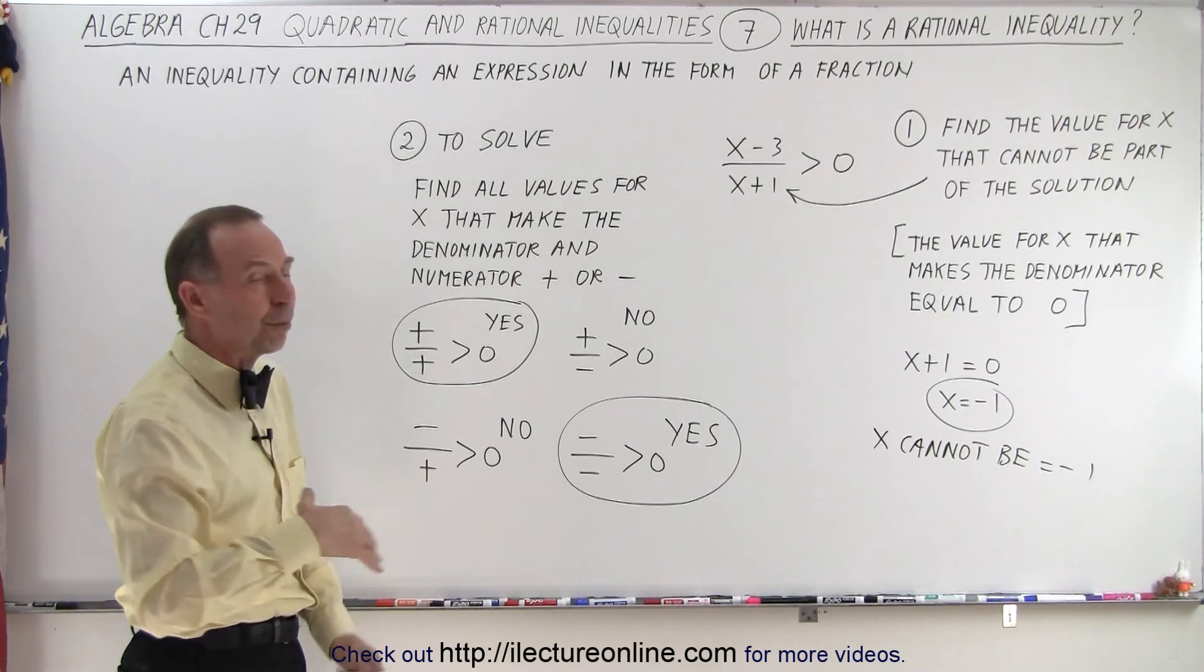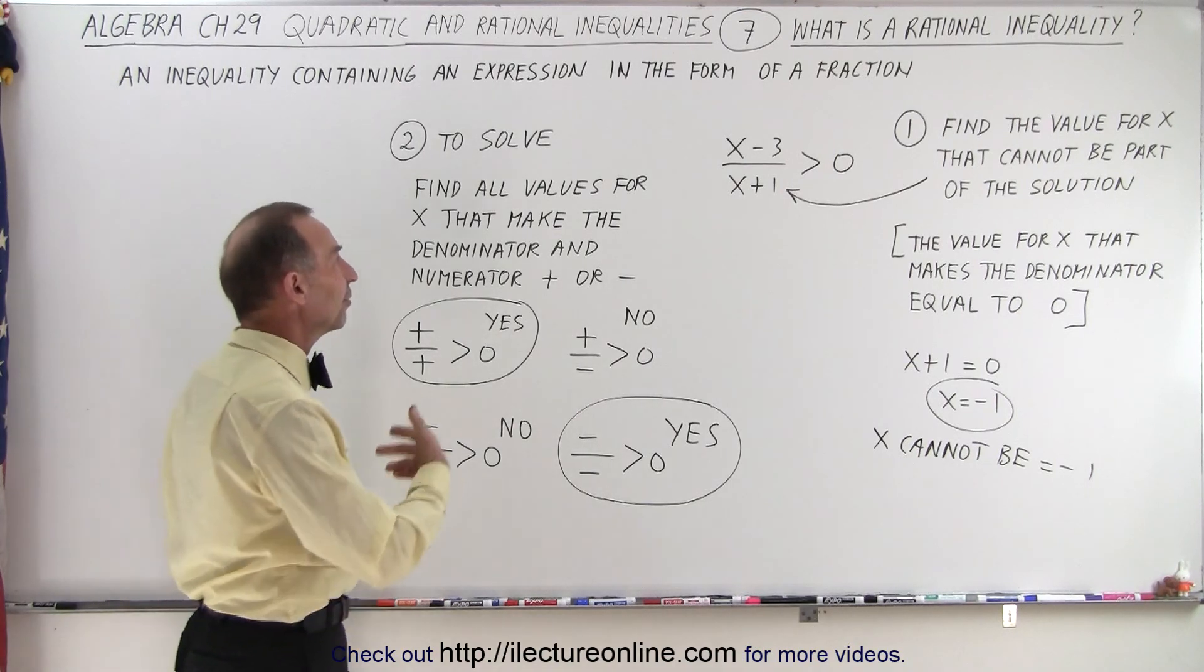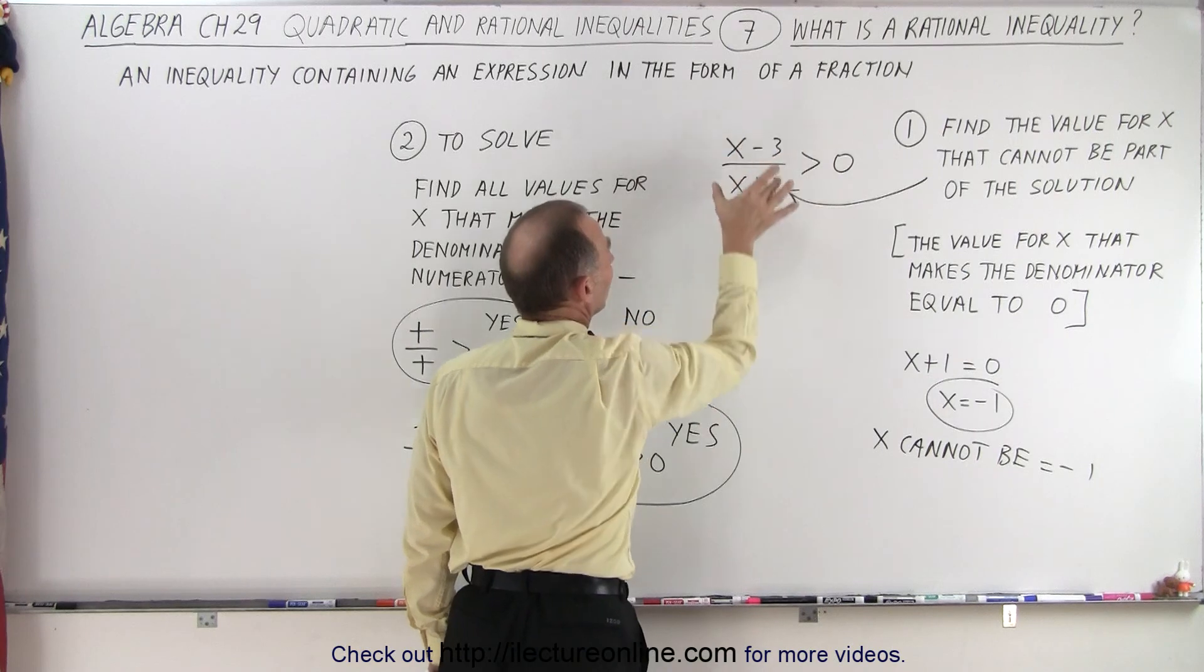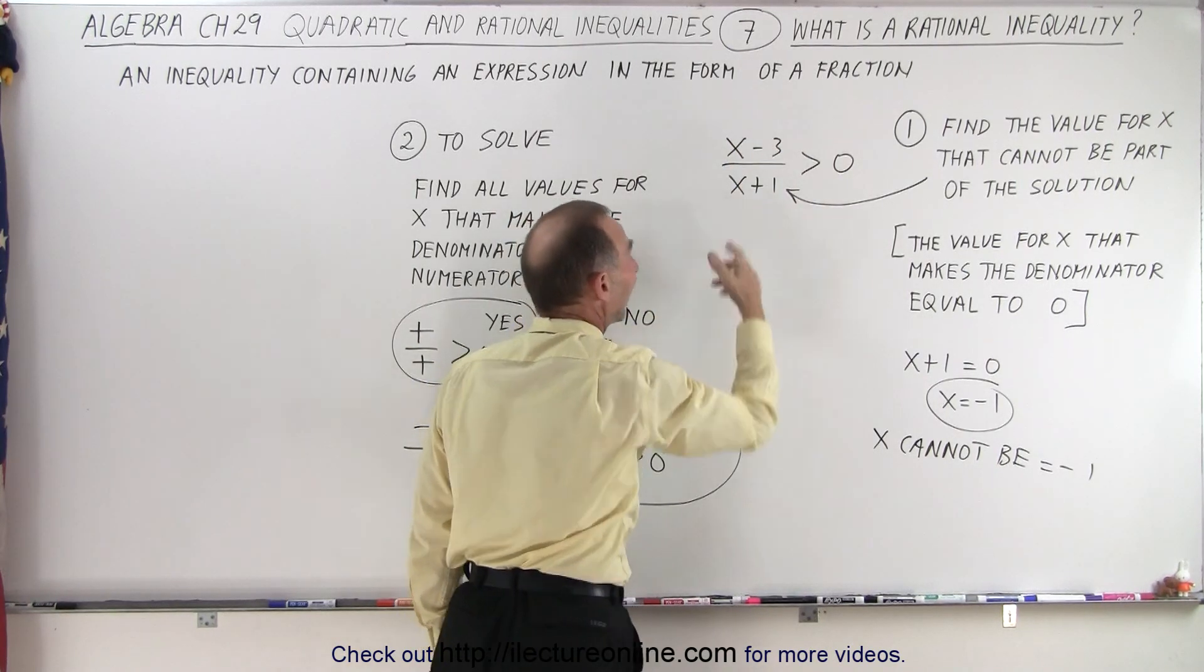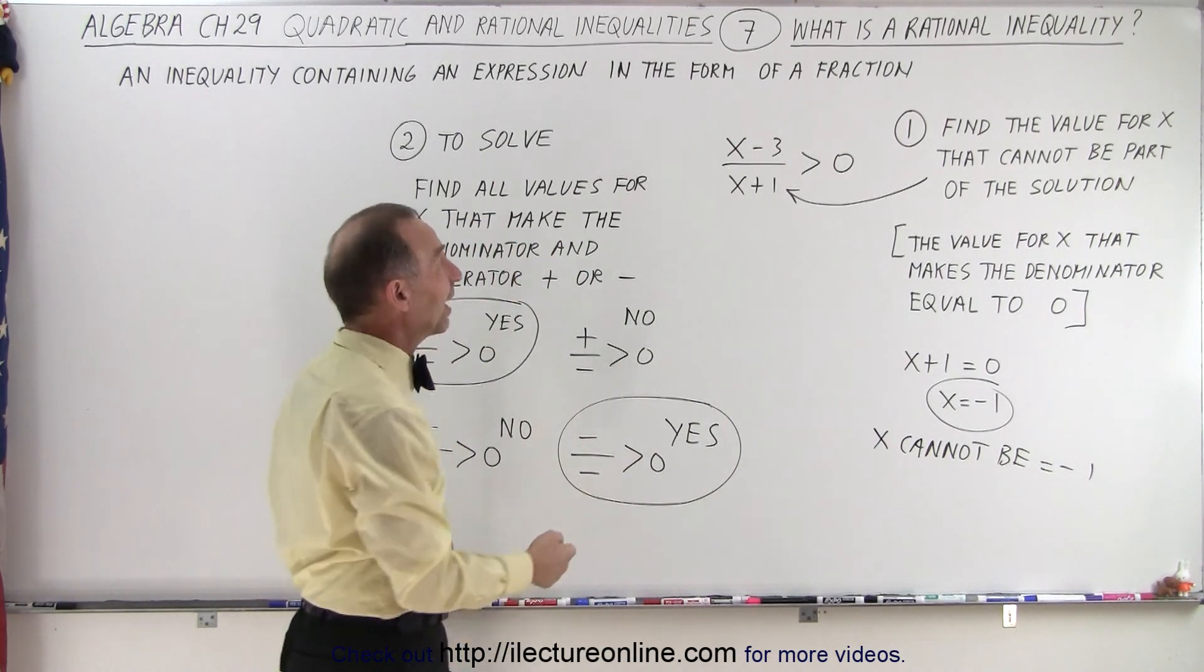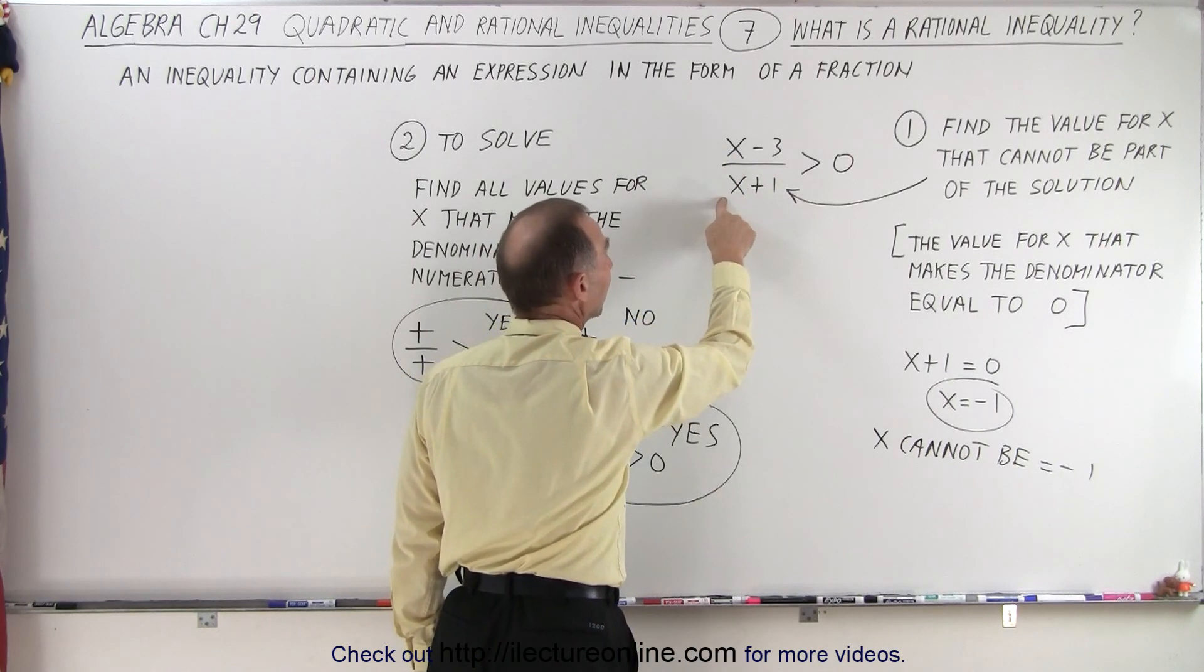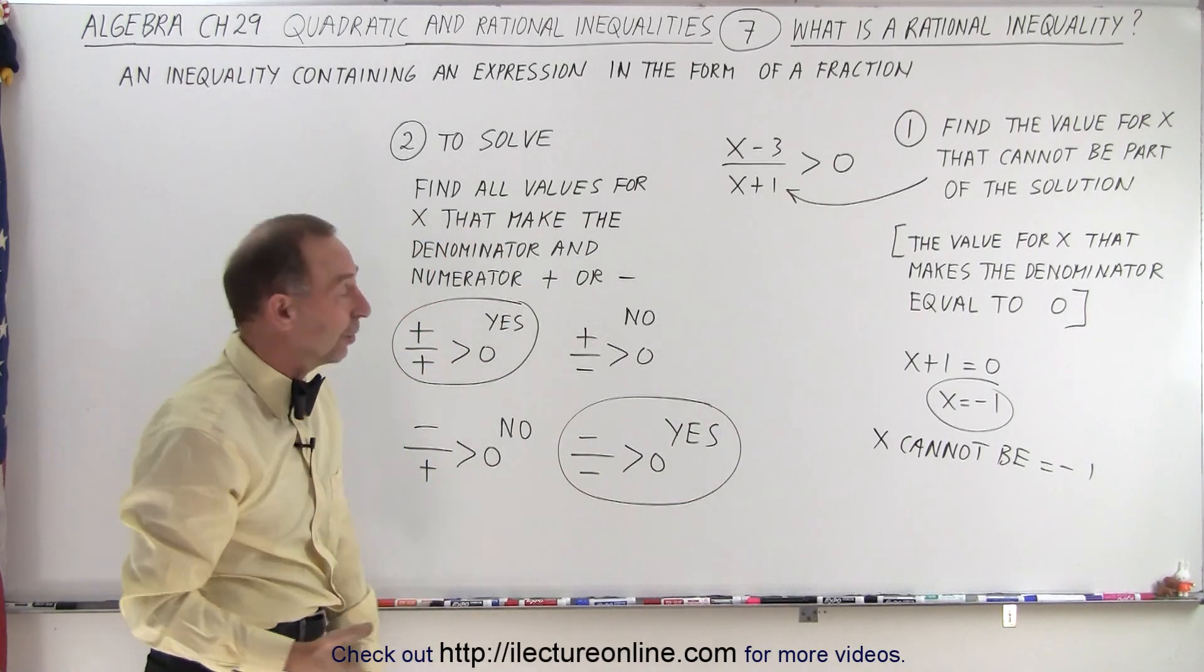Next, we're going to approach the solution a little bit differently. Notice that since it's in the form of a fraction, if the numerator is positive and the denominator is positive, when I divide a positive number by a positive number, I get a positive value, which is always greater than 0. But if I have a negative value in the numerator and a positive value in the denominator, then when I divide a negative by a positive, I get a negative number, and that's less than 0.